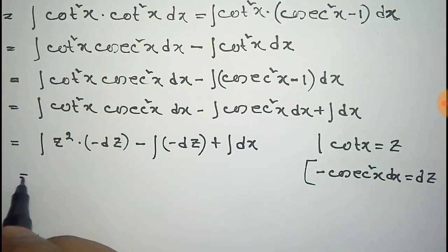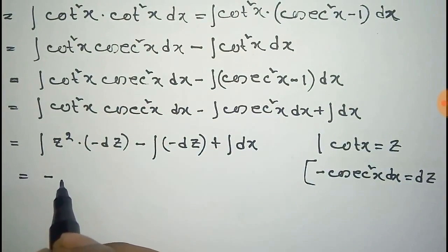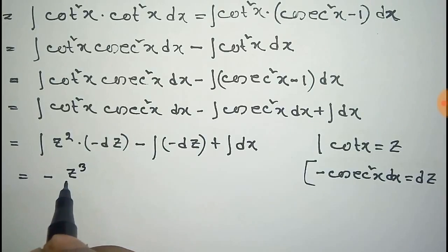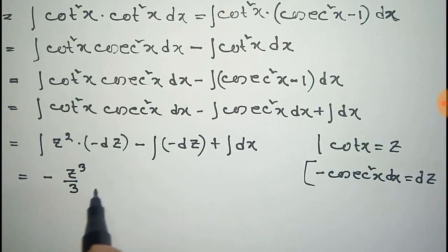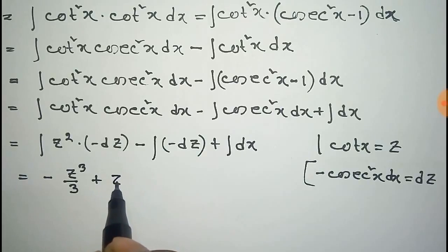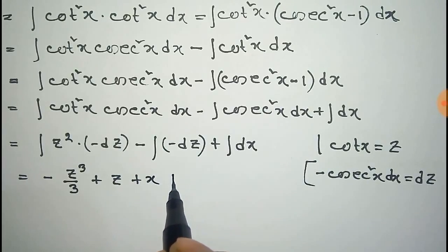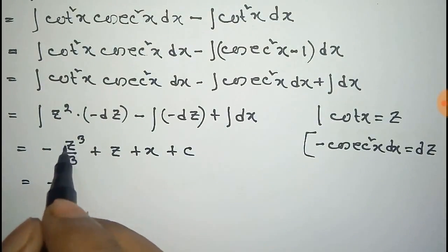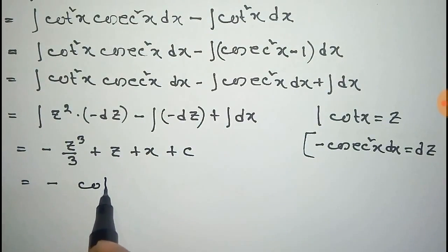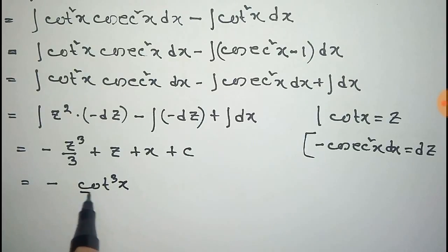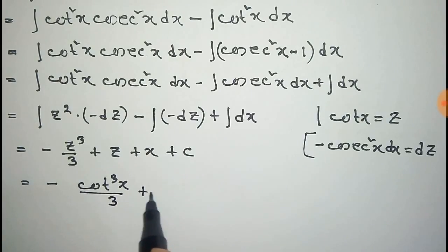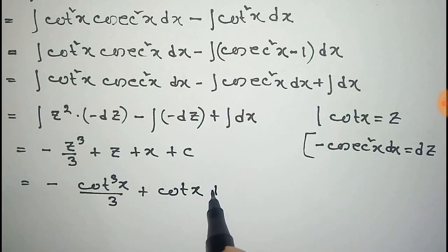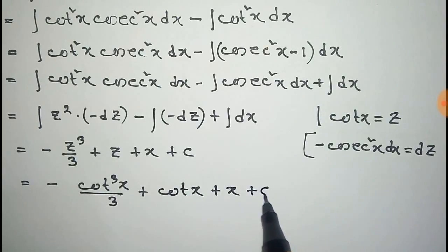Now to integrate this, the integration of z square is z cube by 3, minus integration of dz is z, plus integration of dx is x, plus the constant c. Now we put the value of z, that is cot x, so it will be cot cube x by 3 plus cot x plus x plus c. Thus we integrate cot to the power 4x in this process.